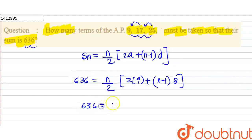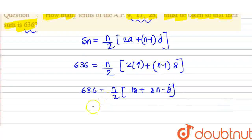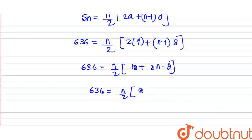636 equals n upon 2. Now, we have to solve this. So, 2 into 9 is 18, plus here we have 8n minus 8. So, 636 equals n by 2 into, here we have 8n plus 10. 18 minus 8 is 10.